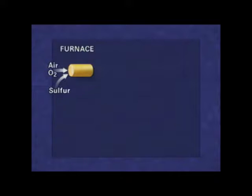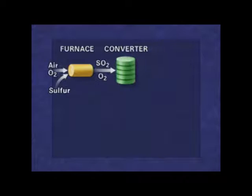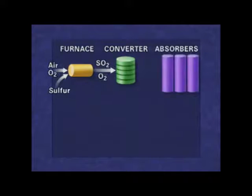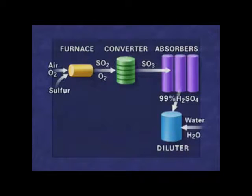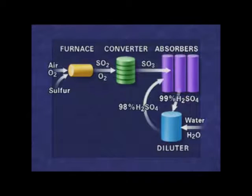Sulfuric acid is formed by burning sulphur in a furnace to form sulphur dioxide. In a converter, the sulphur dioxide reacts with more air to form sulphur trioxide. In absorbers, the sulphur trioxide mixes with fairly concentrated sulphuric acid to increase the concentration of the acid. The acid is then diluted to the concentration needed by the customer. Some acid is recycled through the absorbers, and some is stored for sale.